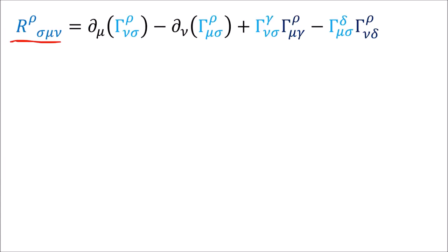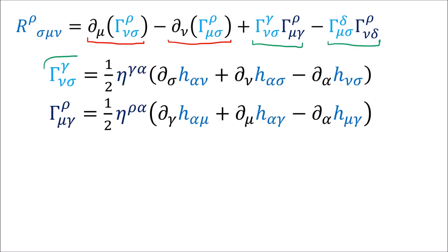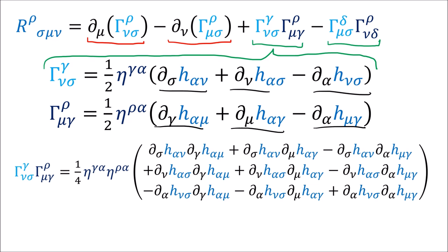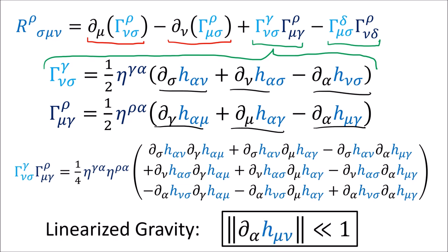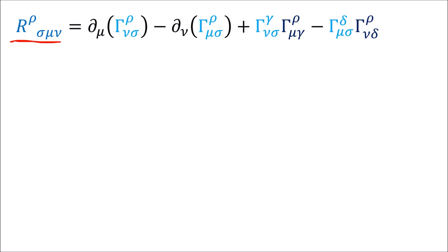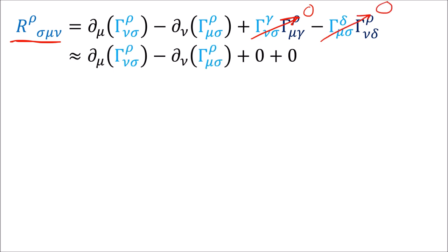Now let's calculate the Riemann tensor. The formula for the Riemann tensor has two types of terms: the derivatives of the connection coefficients and products of the connection coefficients. The connection coefficient is made up of terms that contain the derivative of h, so when we multiply two connection coefficients together, we get terms involving the product of two h derivatives. In linearized gravity, the derivative of h is taken to be small, so the product of two h derivatives is extremely small and can be ignored. So in linearized gravity, the Riemann tensor formula simplifies to the difference of two connection coefficient derivatives.